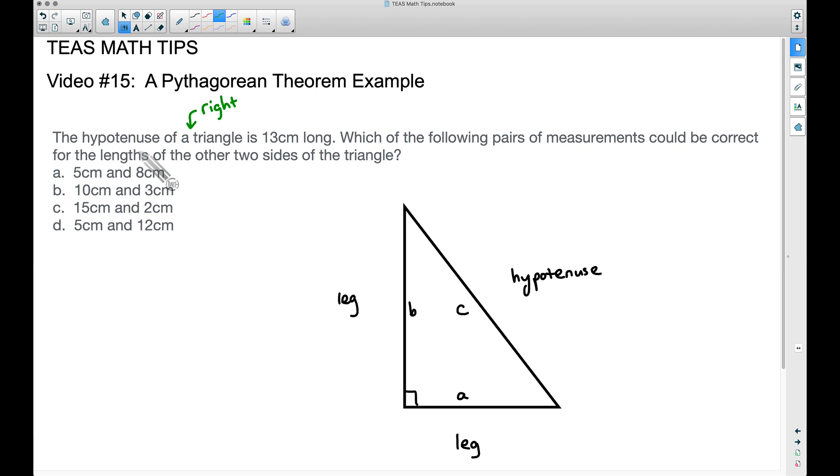The hypotenuse is a side that lives on a right triangle. As a matter of fact, it's going to be the side that does not make the right angle. It's always going to be that. The two sides that do make the right angle, we call those legs, the legs of a right triangle.